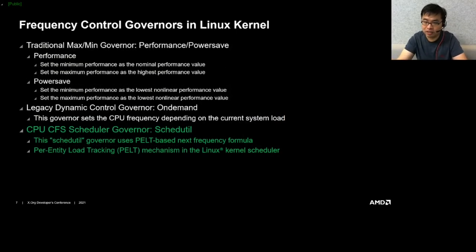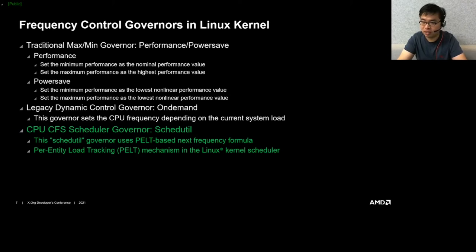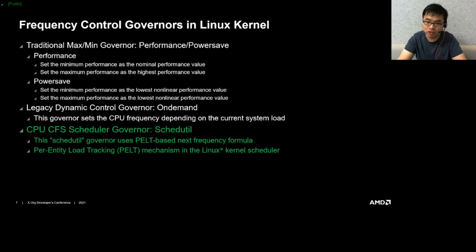The kernel has several governors such as on-demand, performance, powersave, userspace, and schedutil to control the general frequency for most CPU processors. Performance and powersave set the highest and lowest performance goals statically. On-demand is mainly used for most current processors besides modern AMD Zen-series CPUs, and sets CPU frequency based on current system workload. Schedutil expects better integration with the Linux kernel scheduler; load estimation is achieved through schedutil, which is a per-entity load tracking method that provides information about recent workload.